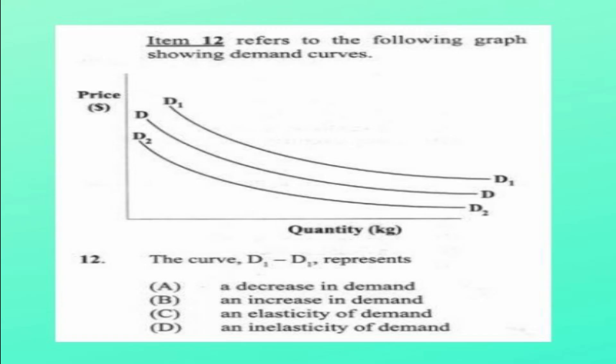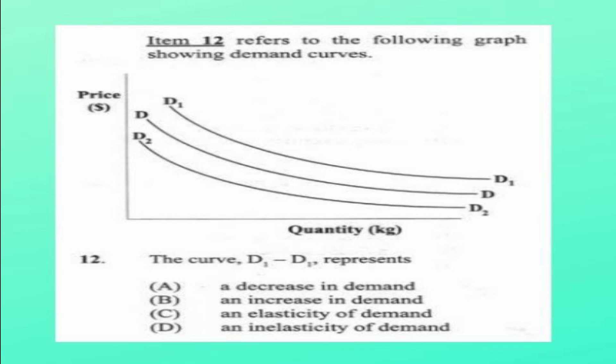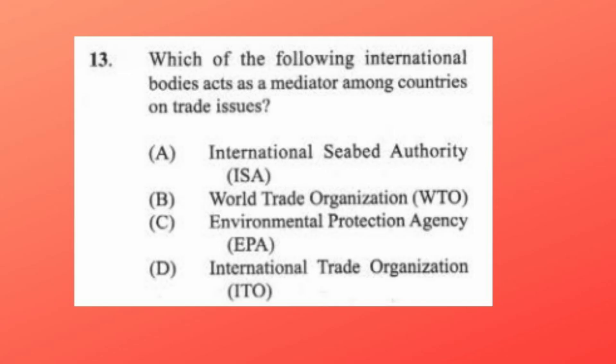Question 12 refers to a graph showing demand curves. Curve D1 represents (a) a decrease in demand, (b) an increase in demand, (c) an elasticity of demand, (d) an inelasticity of demand. The answer is B, an increase in demand. Remember: when the demand curve moves to the right, that represents an increase in demand; when the curve moves to the left, it reflects a decrease in demand.